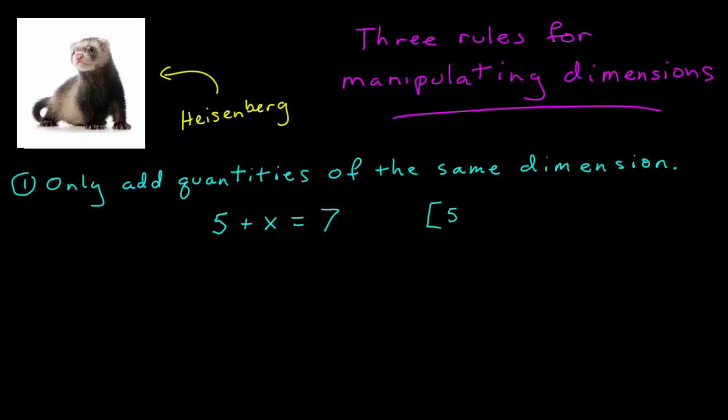Every term here has to have the same dimension. So we said it was a mass, so the dimension of 5 was a mass. That also means the dimension of the unknown X has to be a mass and the dimension of 7 has to be a mass. All the quantities have to be the same dimension.